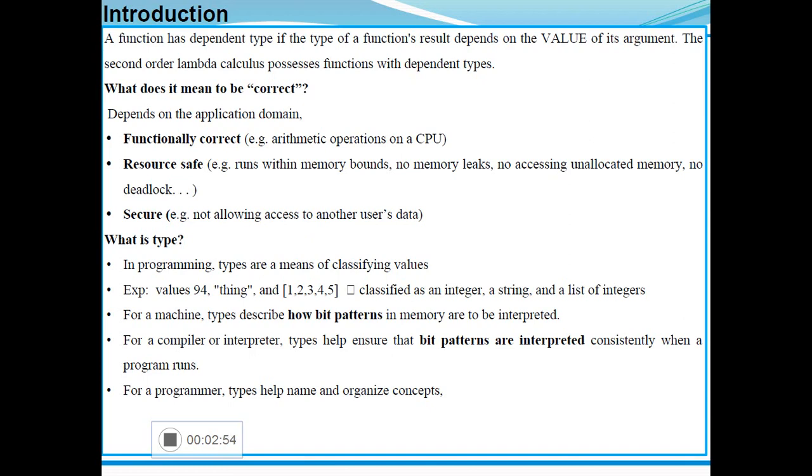If you are taking any programming, we define the function. It has a dependent type if the type of the function result depends on the value of its argument. Secondary lambda calculus possesses functions with dependent types. We are always saying dependent types ensure correctness of a program. So what does it mean to be correct? Depending on the application domain, the correctness may vary. There should be first functionally correct. Based on the arithmetic operation we are performing, it is functionally correct.